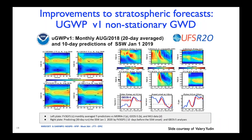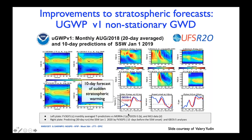The version 1 non-stationary gravity wave drag parameterization was extensively tested by Valerie Yuten as part of the UFS R2O project. On the left are comparisons of satellite temperature observations from MARA-2, GOES-5, and MLS versus model forecasts averaged for August 2018, and you can see that the forecasts do a really good job of representing the observations. On the right is a successful 10-day forecast prediction of the sudden stratospheric warming event that occurred on January 1st, 2019, exhibited by the time series of temperature observed by the GOES-5 in blue and the FV3 GFS in red, showing the sudden spike in temperature after day 10 at 32 kilometers altitude in the polar regions.